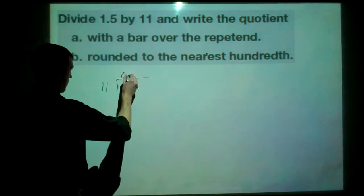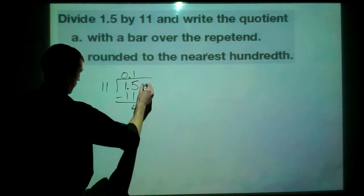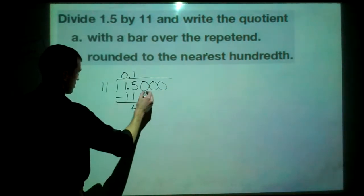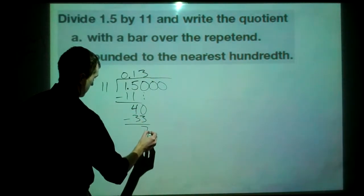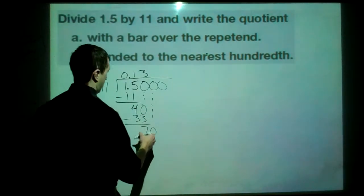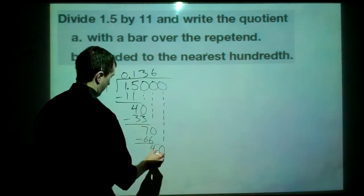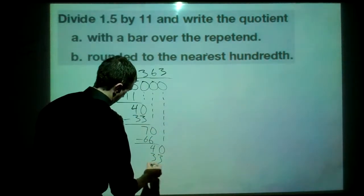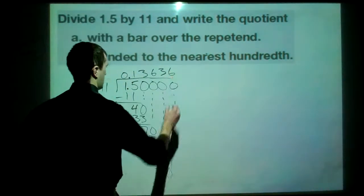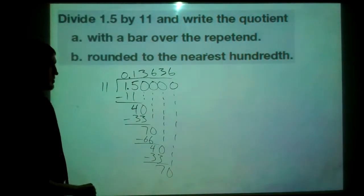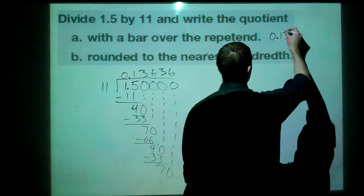11 does not go into 1, but it does go into 15 once. 1 times 11 is 11. Subtract, we get 4. Add some zeros here. Drop our zero down. 40. 11 goes in there 3 times. 3 times 11 is 33. Subtract, we get 7. Drop our zero. We get 70. 11 goes into 70, 6 times. 6 times 11 is 66. Subtract, we get 4. Drop the zero. 40. 11 goes in there 3 times. 3 times 11 is 33. Subtract, we get 7. Drop our zero. We get 70 again. Goes in there six times. We should be able to see our pattern now. 3, 6, 3, 6, 3, 6, that's probably what we're going to keep getting. That is what we're going to keep getting. 0.1 and the bar over the 3 and the 6. 1 is not repeated, but the 3 and the 6 are.